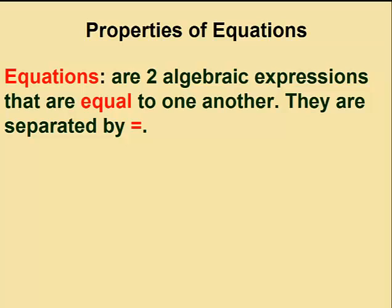Equations are two algebraic expressions that are set equal to one another. Equations are easily recognized by the symbol that separates them, the equal sign, two horizontal dashes, one over top of the other.